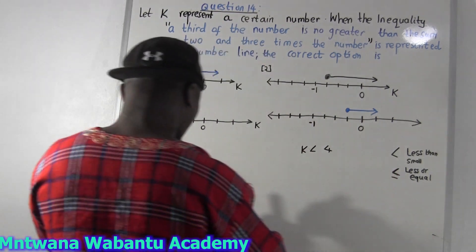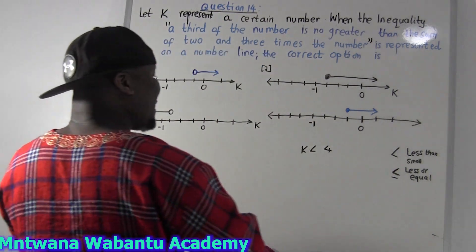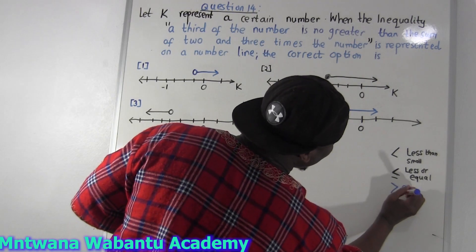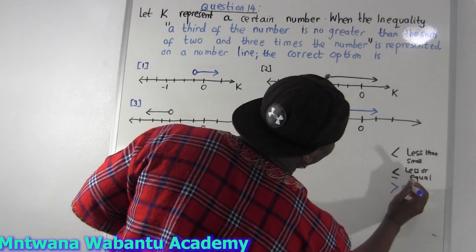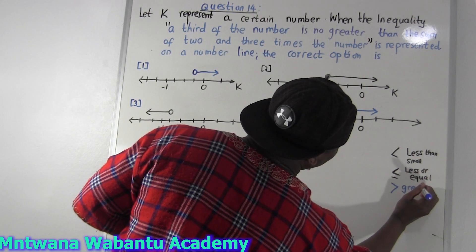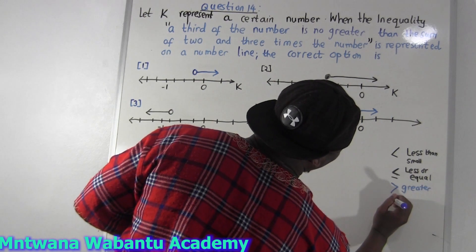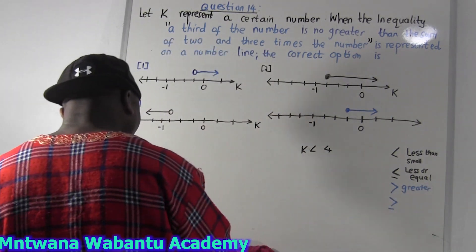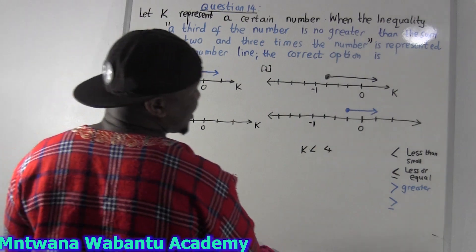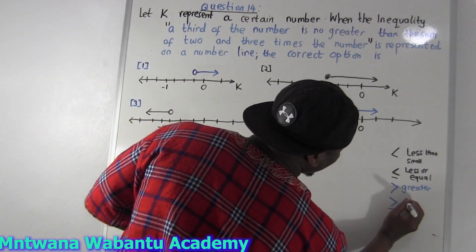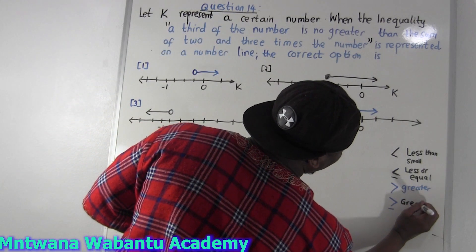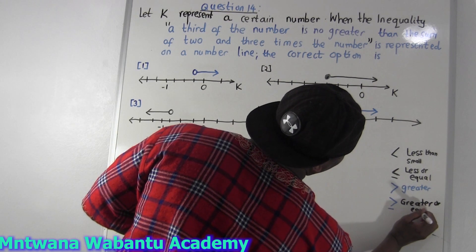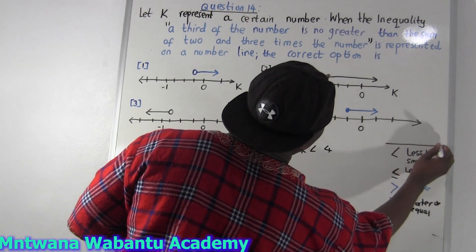With the line underneath, it means smaller or equal. If you flip it the other way around and write it like this, it means bigger than or greater than. And if you add the line underneath that, it means bigger or equal — greater or equal. This is very important, make sure you put it in your mind.